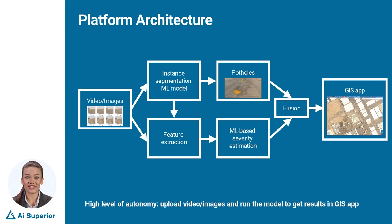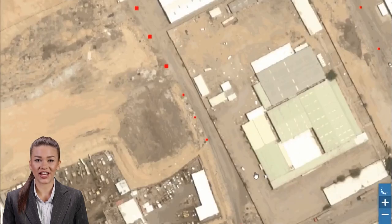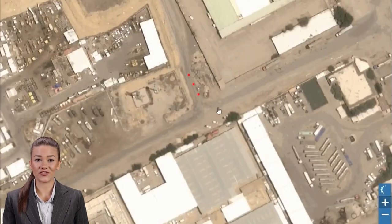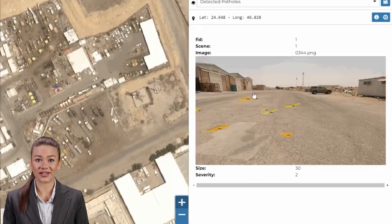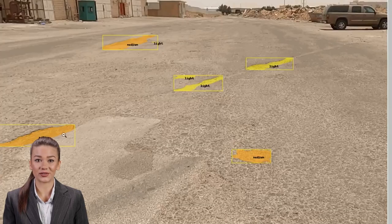The app allows viewing road damage and automatically getting notifications according to predefined rules — for example, if there is a critical pothole that requires immediate action. The mapping of detected potholes to a GIS app is performed for overall road infrastructure assessment and maintenance planning. This enables easy navigation to problematic parts of the road.